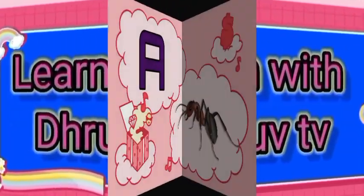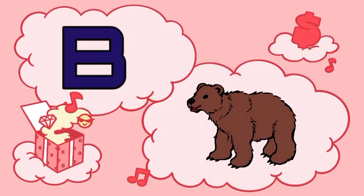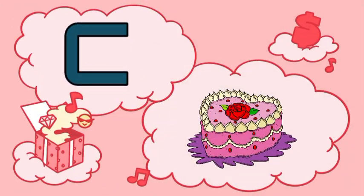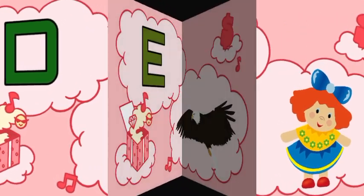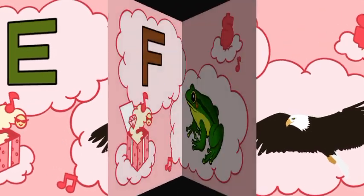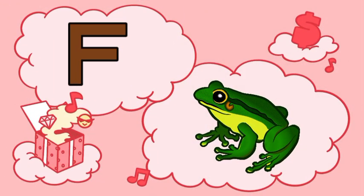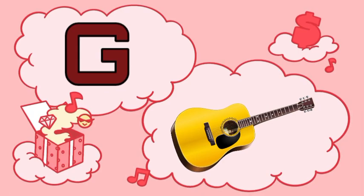Learn with Thrupp TV. A for Ant, B for Beer, C for Cake, D for Doll, E for Eagle, F for Frog, G for Guitar.